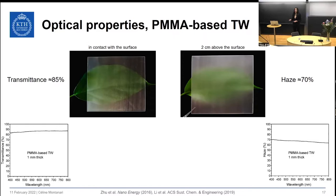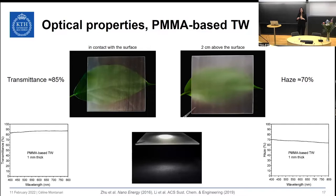The high haze can be visually observed by lifting transparent wood materials above an object, which will then appear blurry or with low contrast. The combination of high transmittance and high haze is attractive for applications such as solar cells, because it provides diffuse lighting as well as high transmittance. However, in order to extend further applications of transparent wood, it is needed to improve transmittance and reduce the haze.